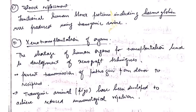Xenotransplantation of organs is another application, addressing the shortage of human organs for transplantation. Xenograft techniques have been developed to prevent the transmission of pathogens. Transgenic animals like pigs have been developed to achieve reduced immunological rejection.